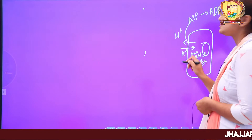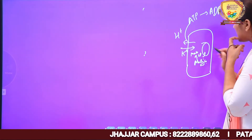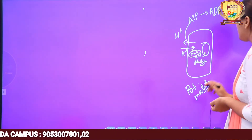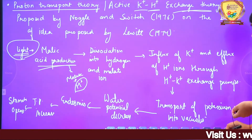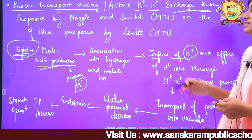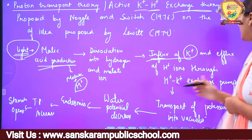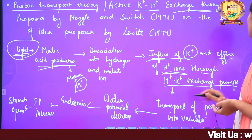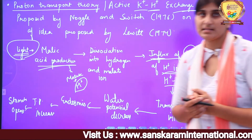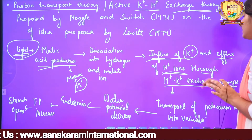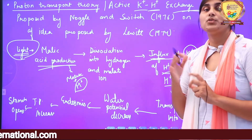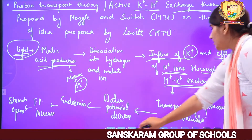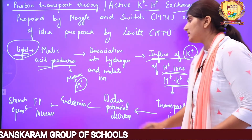Potassium ions cell के अंदर आएंगे और potassium malate बना लेंगे, क्योंकि malate ion पहले ही cytoplasm में पड़ी है। यह potassium malate vacuole के अंदर चला जाएगा। Influx of K+ ions — यानि K+ ions का cell के अंदर inward movement — और efflux of H+ ions, through H+/K+ exchange pumps। Pumps का मतलब ATP का use होगा। Dissociation होते ही malic acid की, H+ ions को बाहर throw कर दिया जाएगा और K+ ions को cell के अंदर बुला लिया जाएगा with the help of these pumps। Potassium malate बन जाएगा और vacuole के अंदर चला जाएगा।